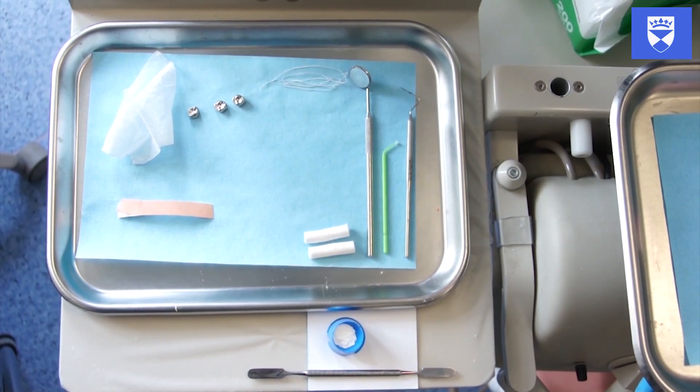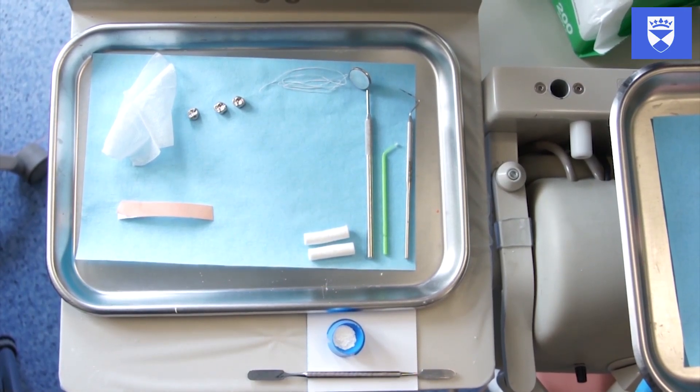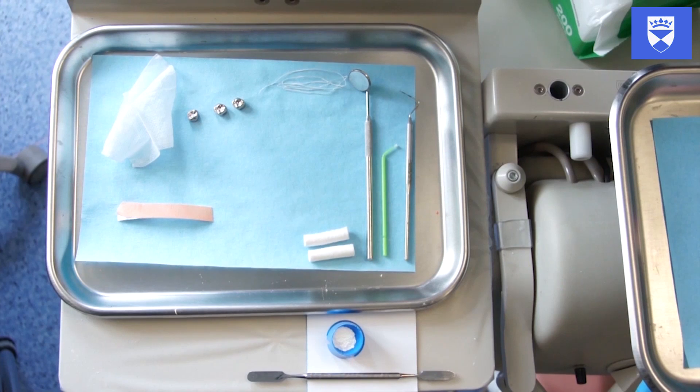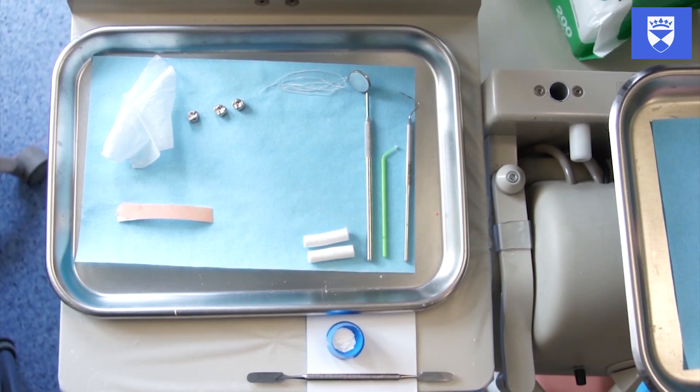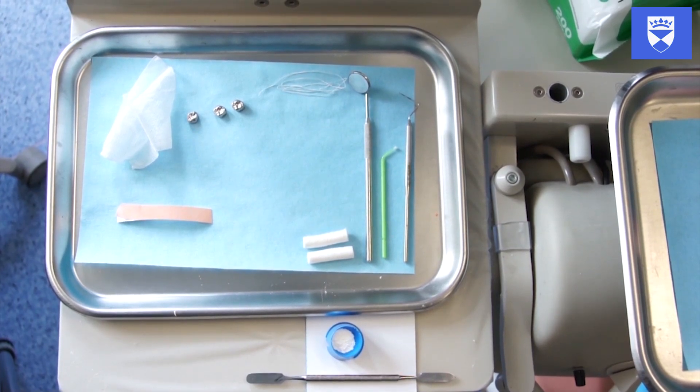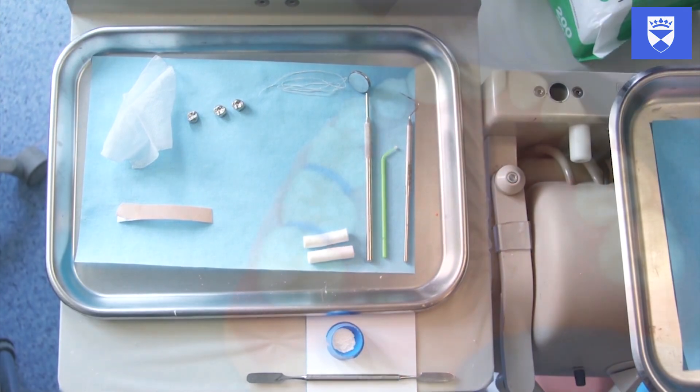This video demonstrates a predictable and reliable method of undertaking the Hull technique for placing a preformed stainless steel crown on a deciduous molar. On the screen you can see a selection of materials and instruments that you may find useful in undertaking this procedure.